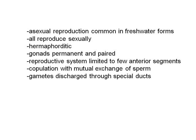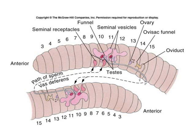Members of this group all have some ability to reproduce asexually, often by fragmentation. They all also reproduce sexually, and when they do they are hermaphroditic. They have permanent gonads and usually the reproductive system is found in the anterior segments. As you saw in the dissection, you can see in this diagram the way in which sperm is passed from the male reproductive structures of one worm to the female reproductive structures of the other worm.